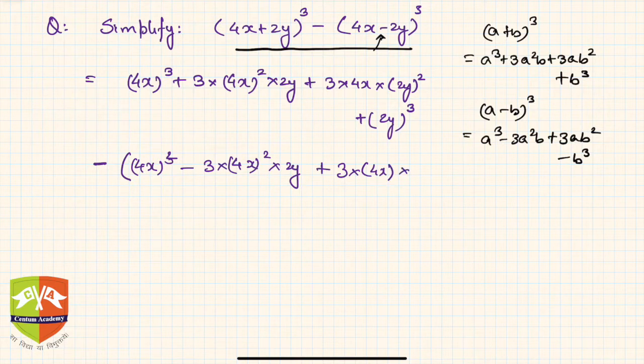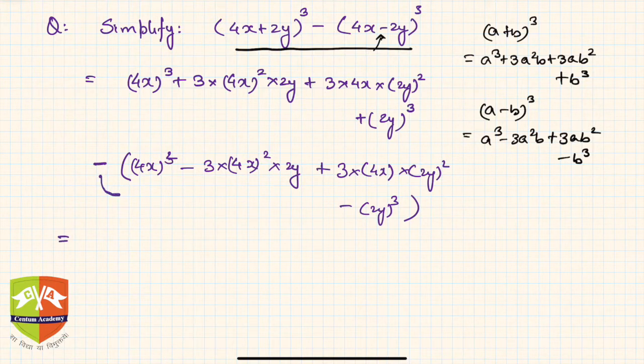Now if you see, let us simplify further. So that means you need to multiply this minus sign with the entire expression here. Let me rewrite it. It is (4x)³, and then 3 times... I am not simplifying for a purpose right now.